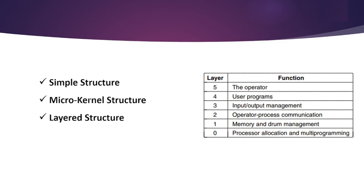The best examples of layered structure are the Unix operating system and the Linux operating system. The main disadvantage — which is very important for your examination — is that data must be updated and sent to each layer, which adds overhead to the system. Data is shared across all layers, and that's why overhead exists in this structure.